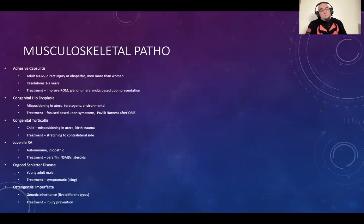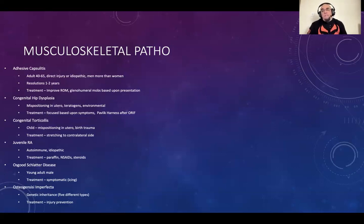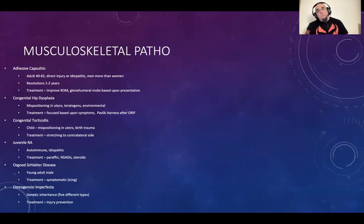Osgood-Schlatter's disease is a primary disease of young adult males, specifically in the puberty time frame. These kids typically are going to have pain with running, active motion, knee jumping, everything like that. The problem is hypergrowth of the tibial tuberosity, which is causing excess strain on the patellar tendon. They're going to complain about difficulty with extension, difficulty with flexion, and just general pain.